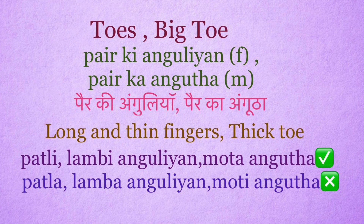Toes: peer ki anguliyan (feminine). Big toe: peer ka angootha (masculine). Long and thin toe: right use is patli lambi angootha. Thick toe: mota angootha. Wrong use: patla lamba angootha, moti angootha.